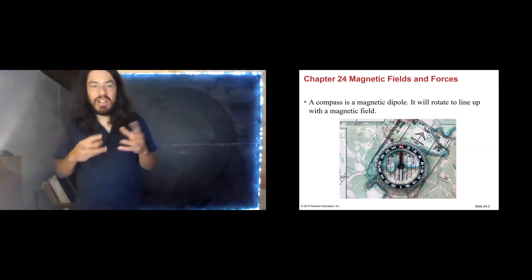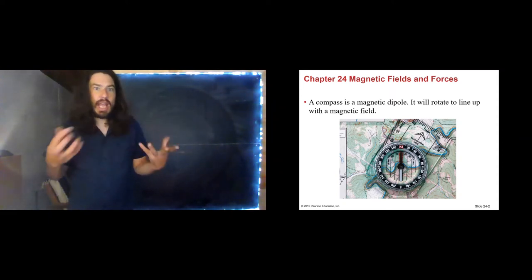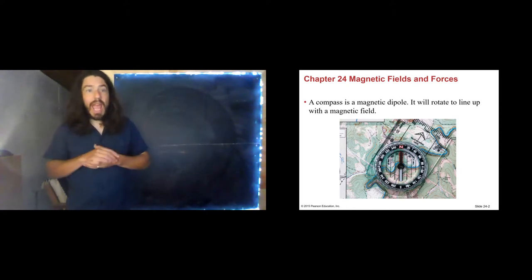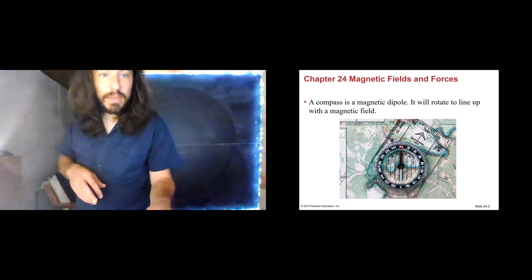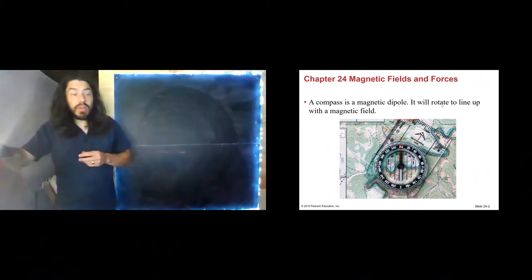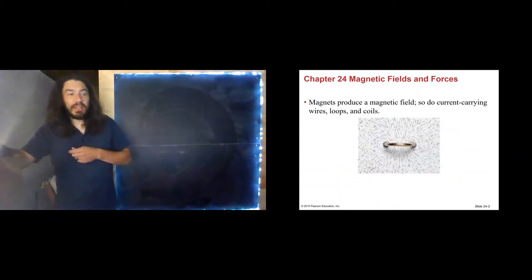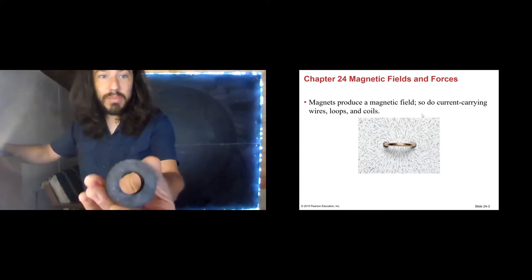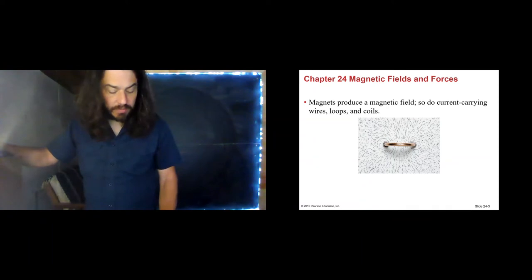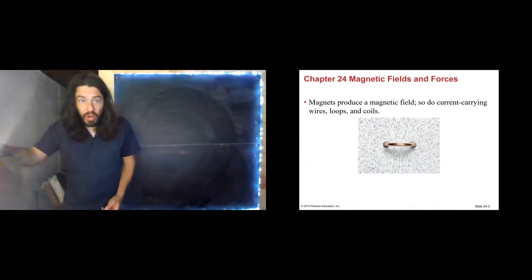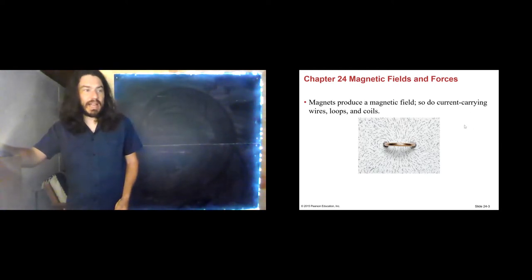We'll talk just a tiny bit about that a little bit later on in the chapter. A compass is just a magnetic dipole. Remember that an electric dipole is a positive and a negative charge hanging out next to each other. A magnetic dipole is a north and a south pole hanging out next to each other. A compass is simply a magnetic dipole, and it can be used to line up with some external magnetic field. We're probably most familiar with permanent magnets, but electric currents can also produce magnetic fields. We'll talk a little bit more about that as we go along.